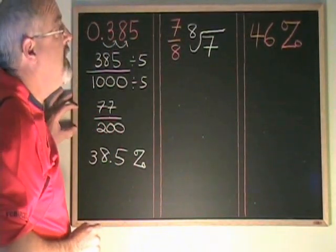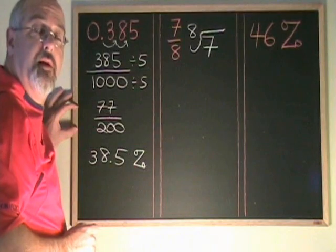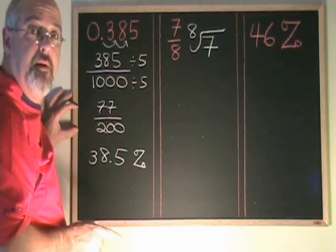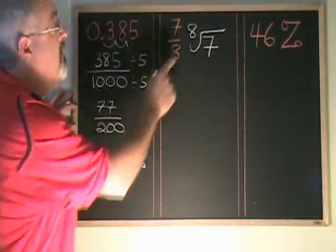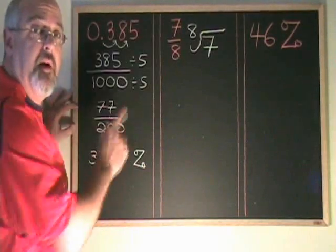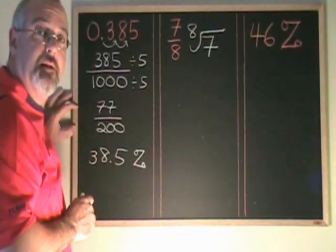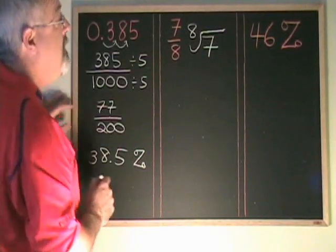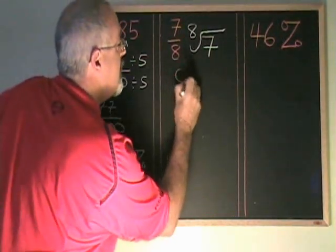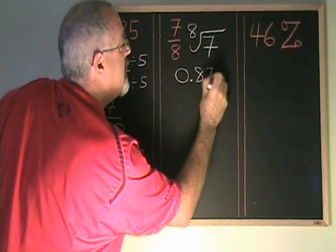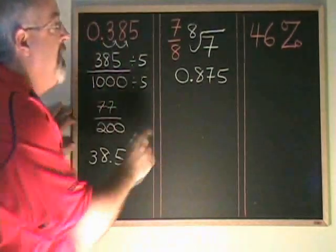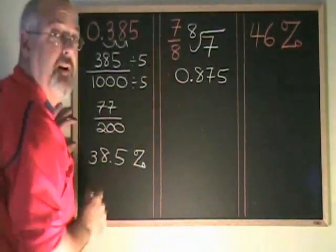Now we can do this in the calculator or we can do it by pencil and paper. When required, be ready to do this division by pencil and paper. I'm not going to do it here because that's the subject for another video. But 7 divided by 8 gives 0.875. This is the decimal form of this fraction.